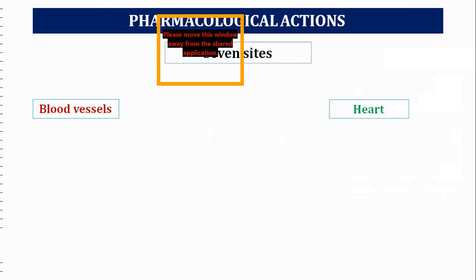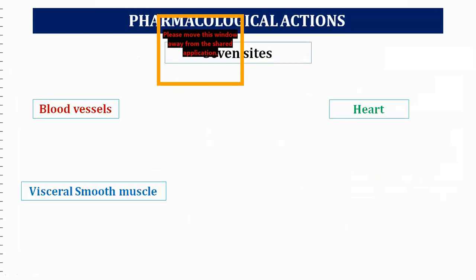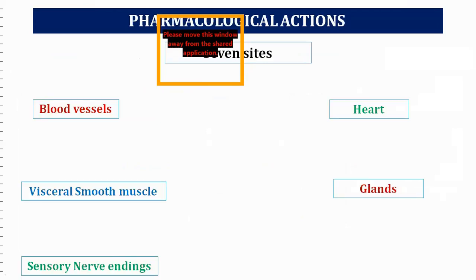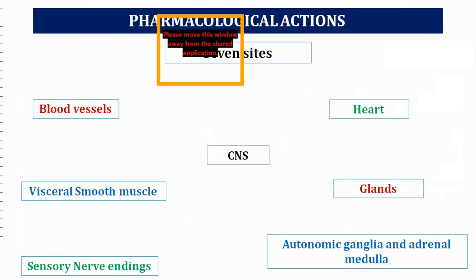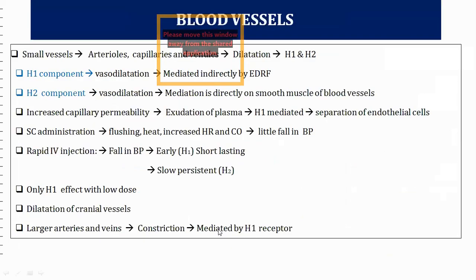We're going to see the pharmacological action on seven sites: blood vessels, heart, glands, visceral smooth muscles, CNS, autonomic ganglia, adrenal medulla, and sensory nerves. First, we'll start with the blood vessels — small blood vessels where they are.